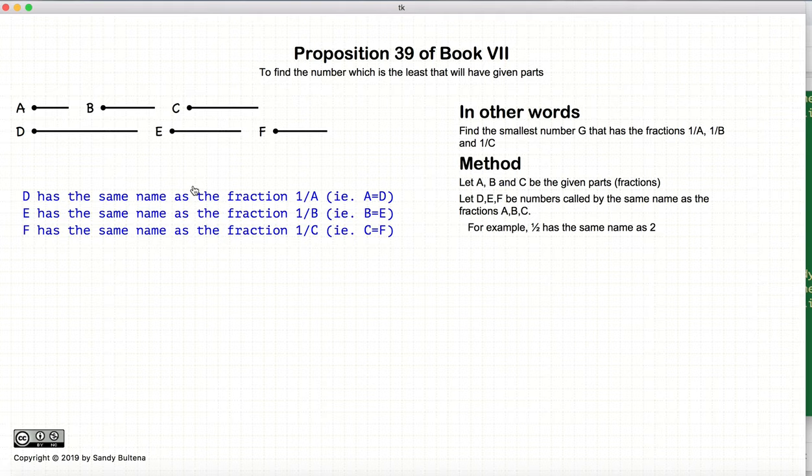And first thing we're going to do is we're going to define the numbers D, E, and F, which according to this proposition refers to them as D has the same name as the part. And this is where I'm interpreting that to mean that if A is 1/3, then D would be 3. If B is 1/2, E would be 2, and so on and so forth.